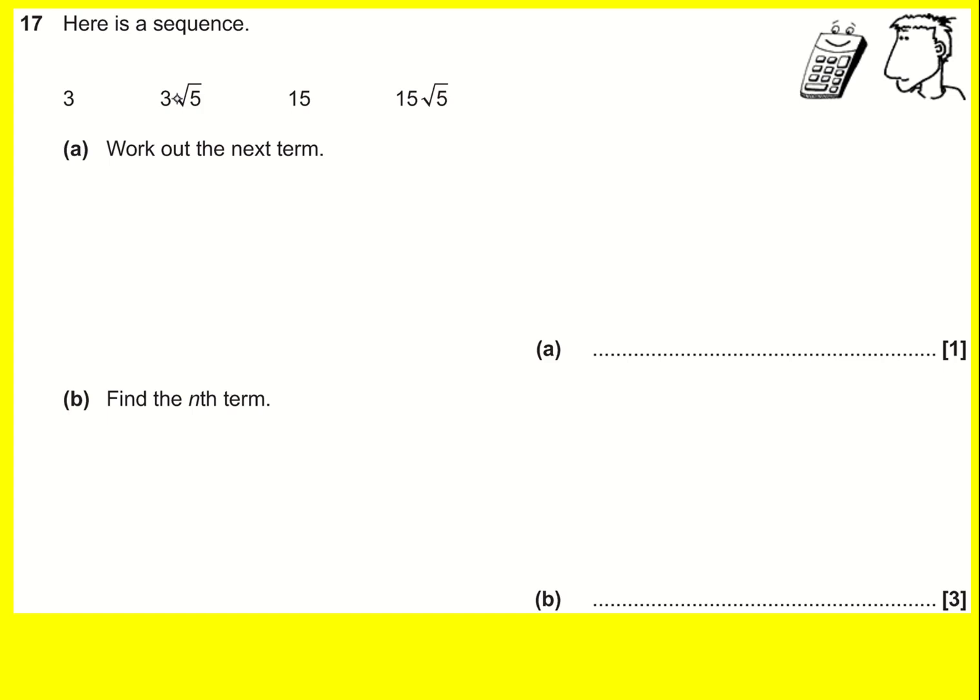Looking at this sequence, it does not look very nice and we're not adding a constant value every time. In fact, we are multiplying by something every time - we're timesing by root 5. When I times this by root 5, it becomes 3 times 5 which is 15, and you can see here this one.